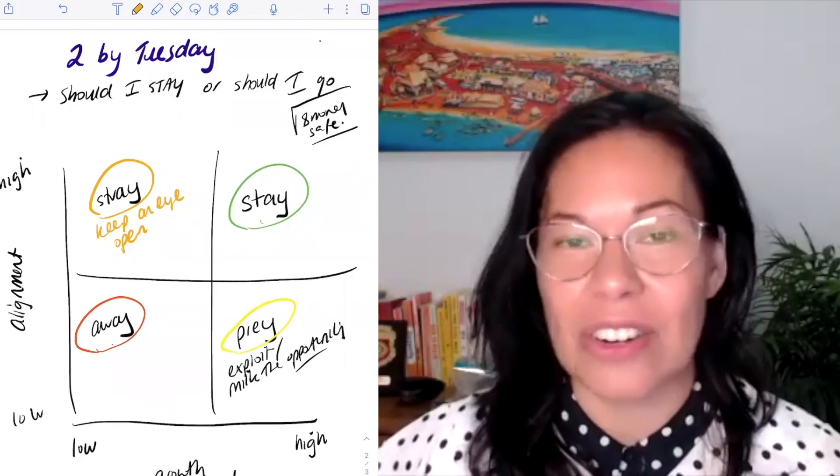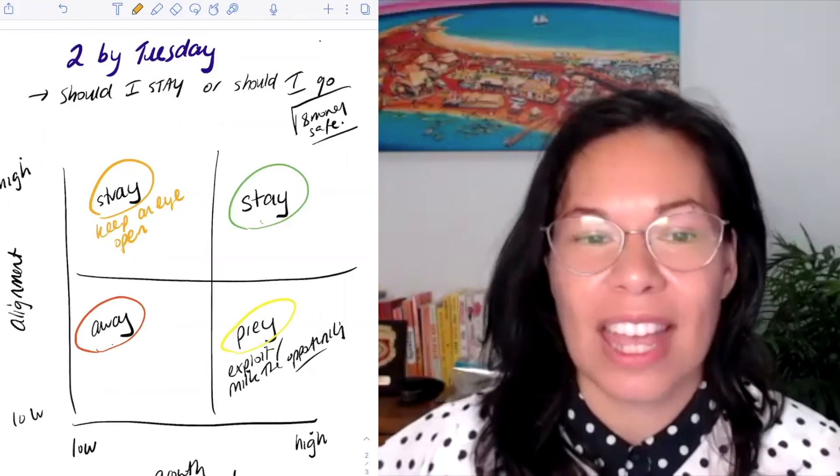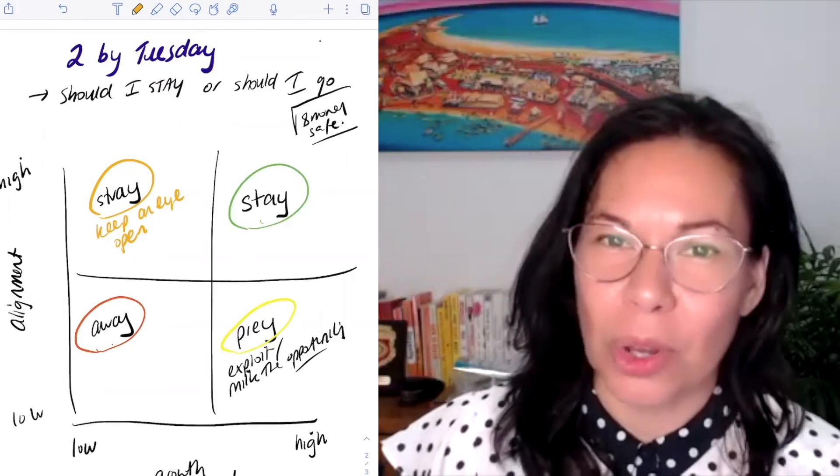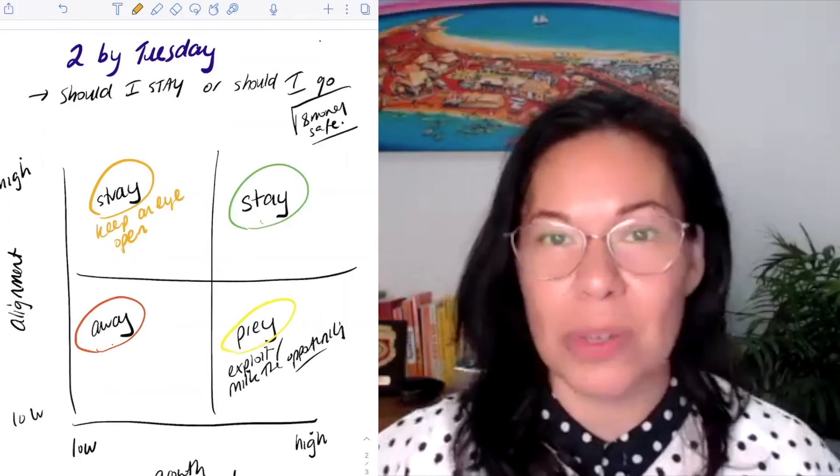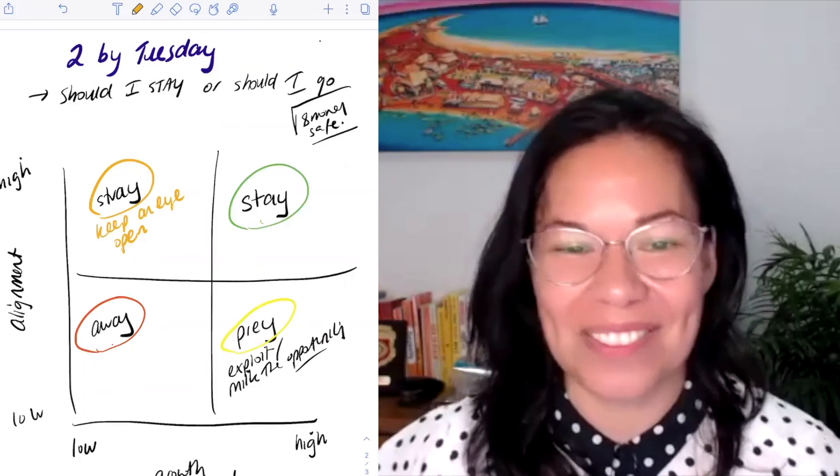The four options are: things are great across all, you stay. You have high alignment but there's low growth potential, so you prey—you milk the opportunity, use it for what it is.